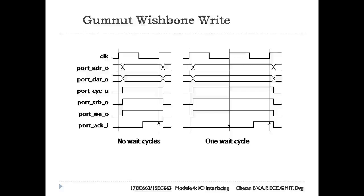The timing of Gumnet IO write operations without wait cycles is shown in the first part of the figure, and with one wait cycle in the second part. When the Gumnet core executes an OUT instruction, it performs a port write operation. Transitions are synchronized by the system clock. The Gumnet starts a write operation by driving Port_ADR_O with the address computed by the OUT instruction and Port_DAT_O with the data from the source register. It sets Port_CYC_O, Port_STB_O, and Port_WE_O control signals to 1 to indicate commencement of the write operation.